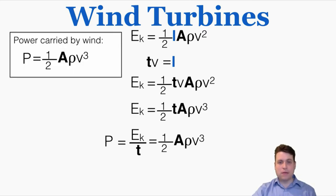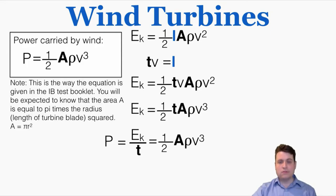This equation tells you the power carried by wind: P = ½Aρv³, where A is the area of the turbine, ρ is the density of air, and v is the velocity of the air cubed. This is the form given in your IB test booklet. You'll be expected to know that A = πr², where r is the length of the turbine blade.